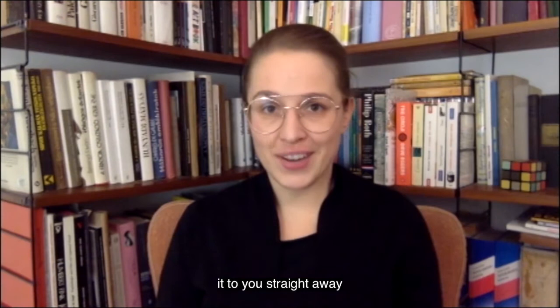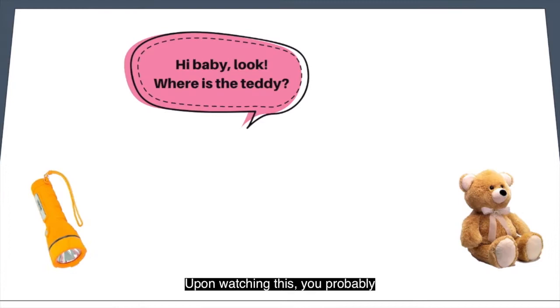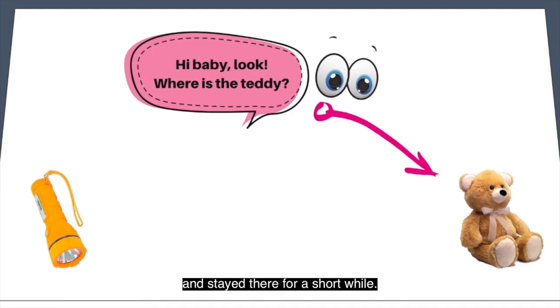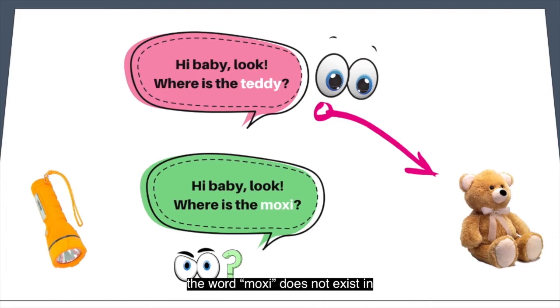After watching this short animation, you probably moved your eyes to the teddy bear and stayed there for a short while. Such a response would show me that you have an idea what the word 'teddy' means and what kind of objects in the world it picks out. If instead of asking you about a teddy I asked you, for example, 'where is the moxie?', your gaze should be more random because the word 'moxie' does not exist in English and you would have no way to interpret what I want from you. This very logic provides a pretty simple but powerful tool to investigate word knowledge and can be used in very young babies. What I have just shown you was a trial from an infant task.